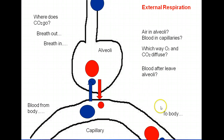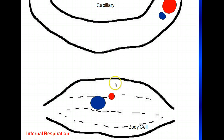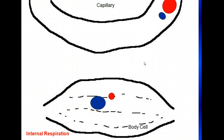Now let's follow this blood to the body. It will first go to the left side of the heart, which will then pump it out to the body. It will go through a large number of blood vessels until it gets down to a capillary, which again has a thin membrane. These are the cells of the body — every cell needs to be close to a capillary because that is how it gets its oxygen and gets rid of its carbon dioxide.